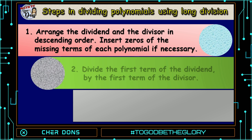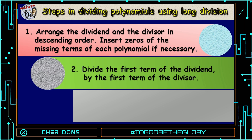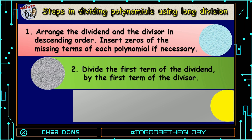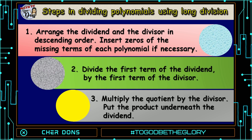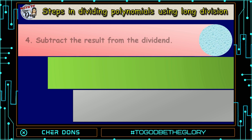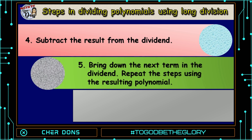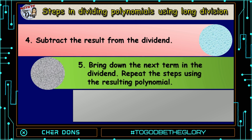Number 2: Divide the first term of the dividend by the first term of the divisor. Number 3: Multiply the quotient by the divisor, and put the product underneath the dividend. Number 4: Subtract the result from the dividend. Number 5: Bring down the next term in the dividend, then repeat the steps using the resulting polynomial.